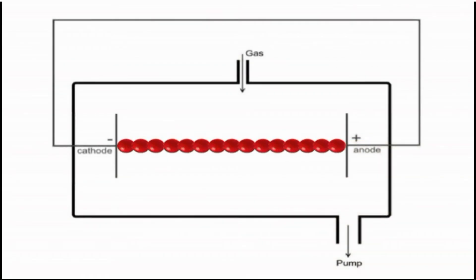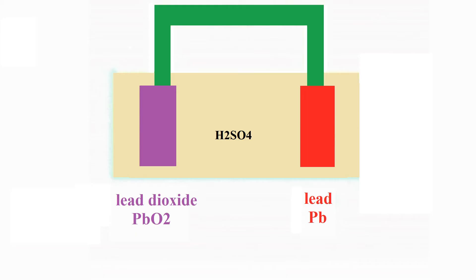To illustrate voltage, let's briefly look at the basic lead battery. There are two terminals: lead, designated as the negative pole, and lead dioxide, the positive pole. These terminals are immersed in a solution of sulfuric acid and water.